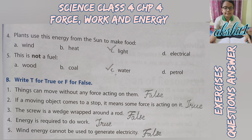Write T for true or F for false: First, things can move without any force acting on them — False, because things can only move with a force acting on them. Second, if a moving object comes to a stop, it means some force is acting on it — True. Third, the screw is a wedge wrapped around a rod — True, because the screw is an inclined plane wrapped around a central rod.